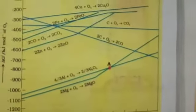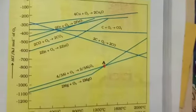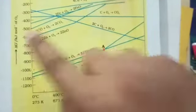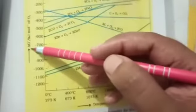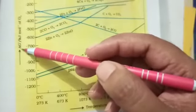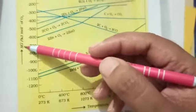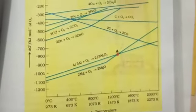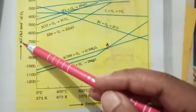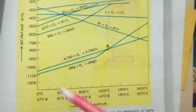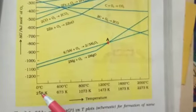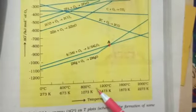First, you have to understand what this graph is. The main body of this graph shows delta G0 on this axis and temperature on this axis. So this graph is basically delta G0 versus temperature.